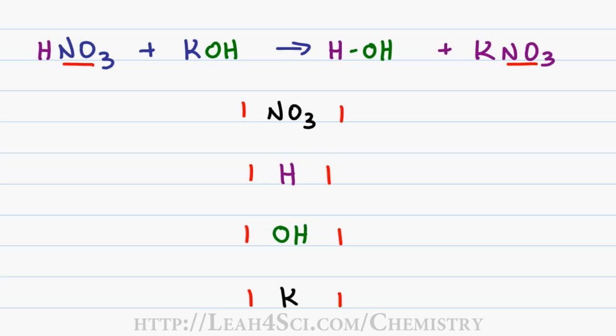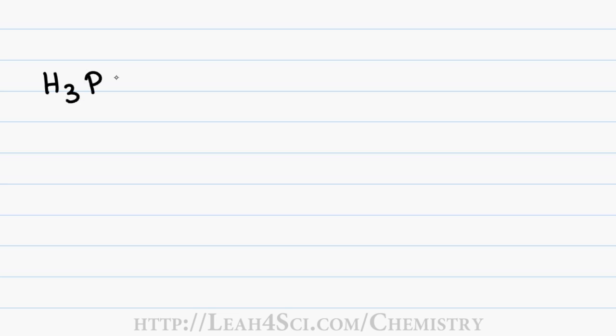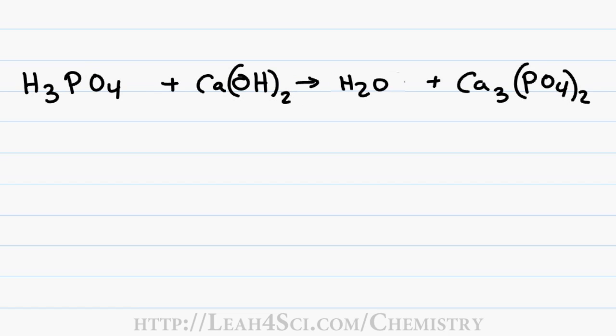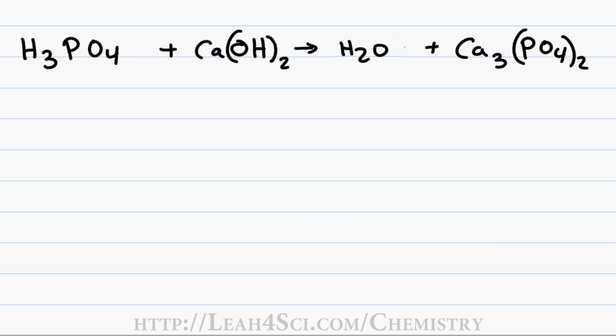But now what happens if we look at a more complex acid-base reaction? Let's take a look at what happens when you react phosphoric acid with calcium hydroxide to form water and salt. In this case the salt is Ca3(PO4)2. Instead of writing out every single atom that I have, I want to break it up into pieces. Let's see how we can apply this trick here. Of the atoms that we have, some of them show up in common polyatomics and we want to keep them together. First thing we'll do is change the acidic hydrogen to be purple and we'll change the basic hydroxide to be green. And now let's write out what we have.